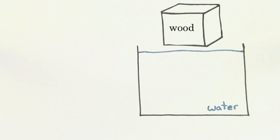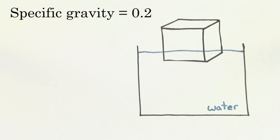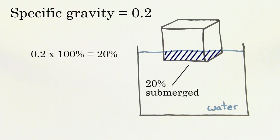For instance, say you let a cube of wood with specific gravity 0.2 float in water. Since the specific gravity is 0.2, that means that 20% of the total volume of this wood is going to be submerged below the water while it's floating.